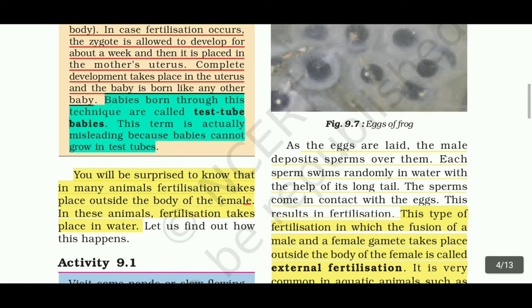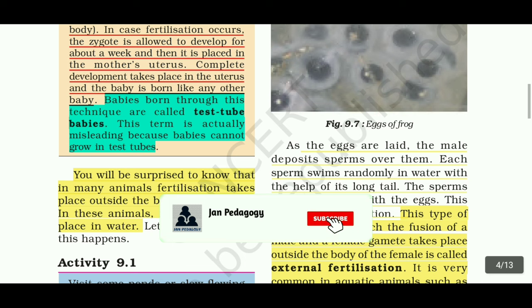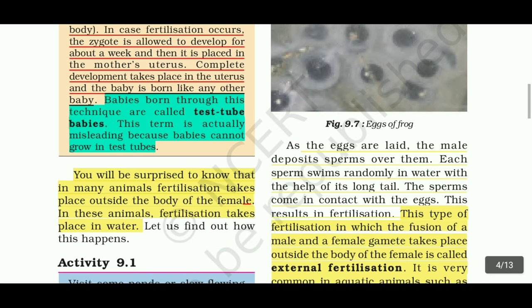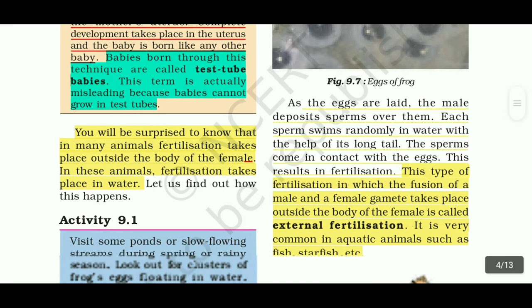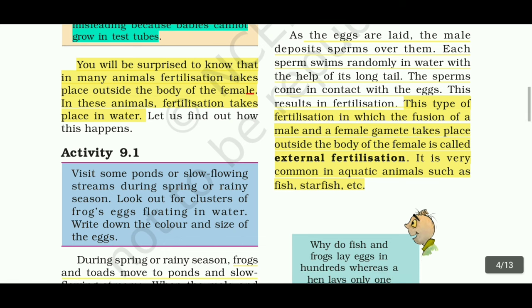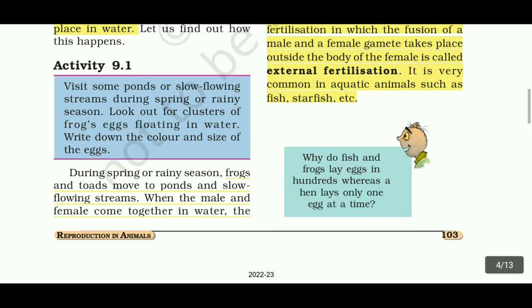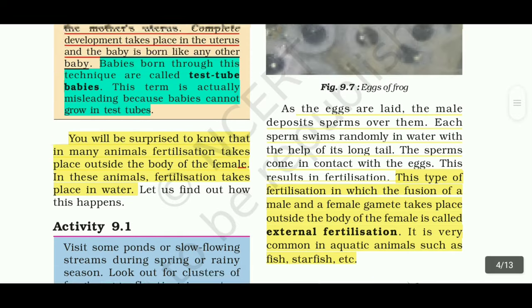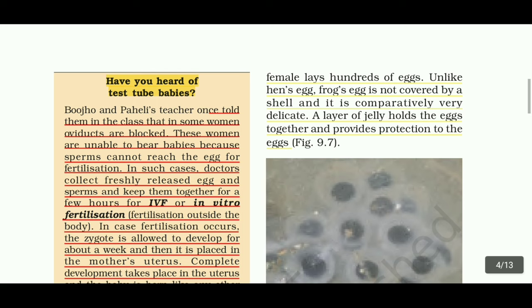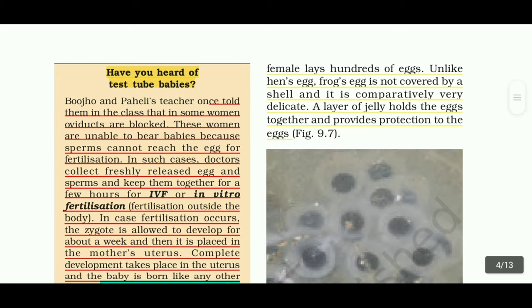You will be surprised to know that in many animals, fertilization takes place outside the body of the female. In these animals, fertilization takes place in water. The male and female come together in water, and the female lays hundreds of eggs. Unlike a hen's egg, a frog's egg is not covered by a shell — it is comparatively very delicate. A layer of jelly holds the eggs together and provides protection.